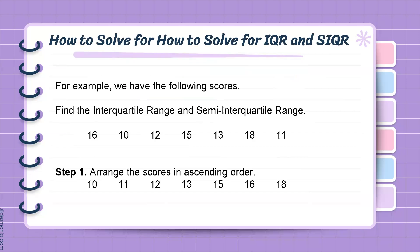Now we solve for the IQR and the SIQR. Let's consider the following set of scores: 16, 10, 12, 15, 13, 18, and 11. Step 1: Arrange the scores in ascending order, from lowest to highest. We have: 10, 11, 12, 13, 15, 16, and 18.